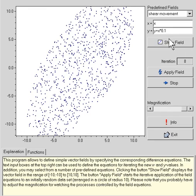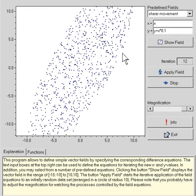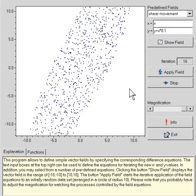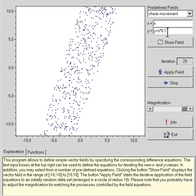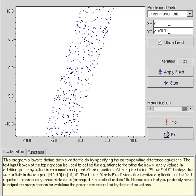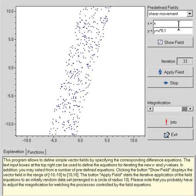So this is called shear movement. X stays the same, so left to right stays the same. Y plus x, that's the step, point one. Okay, so that's shear movement, fine.